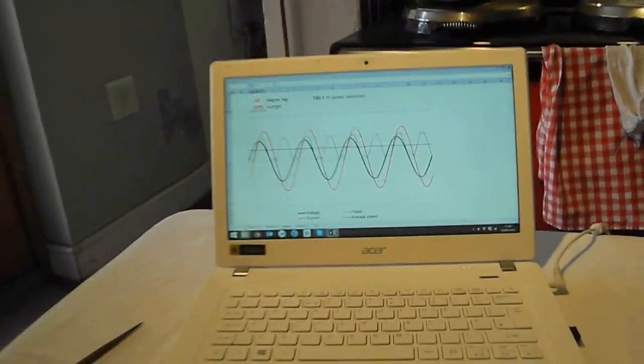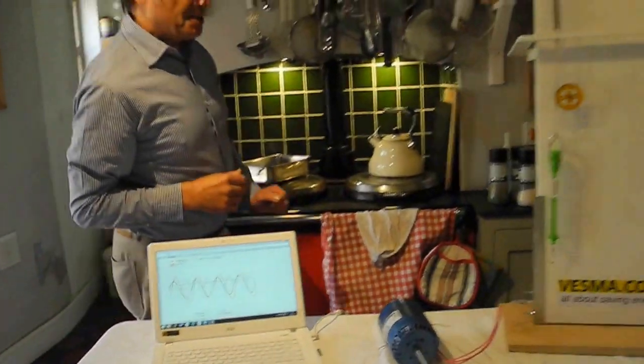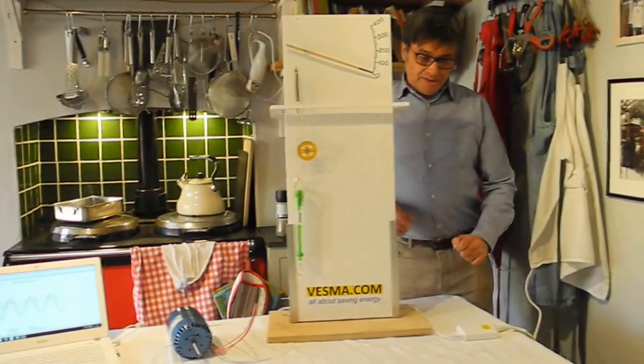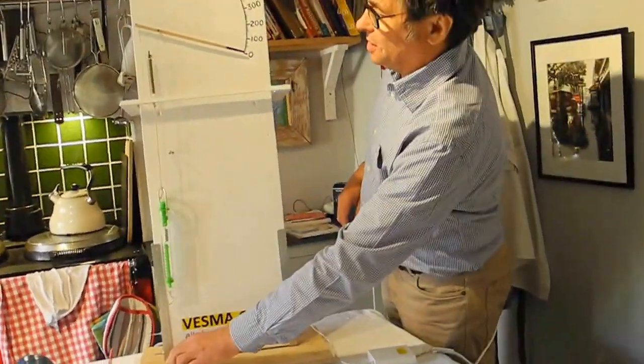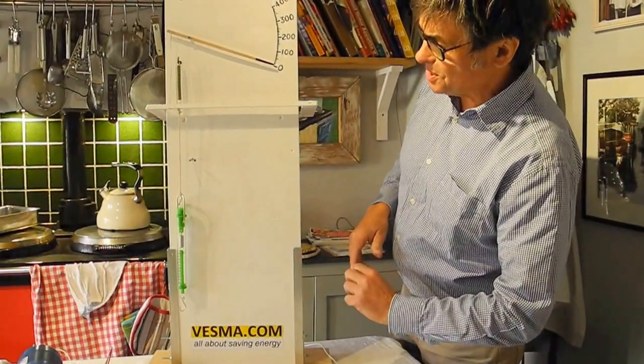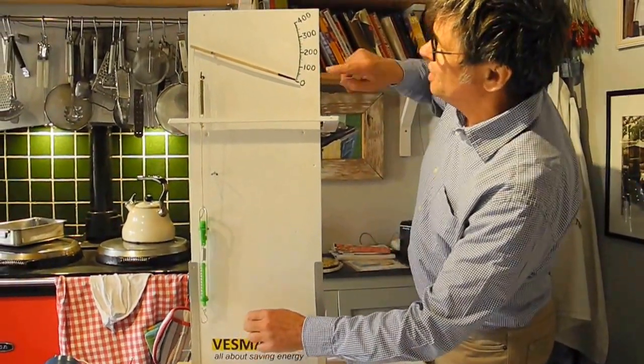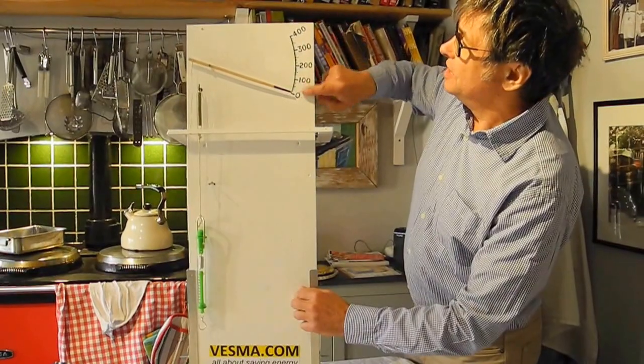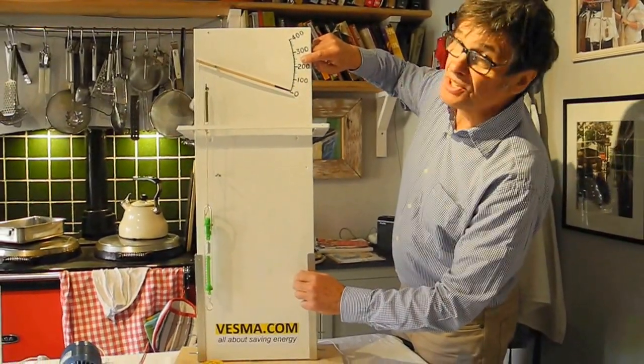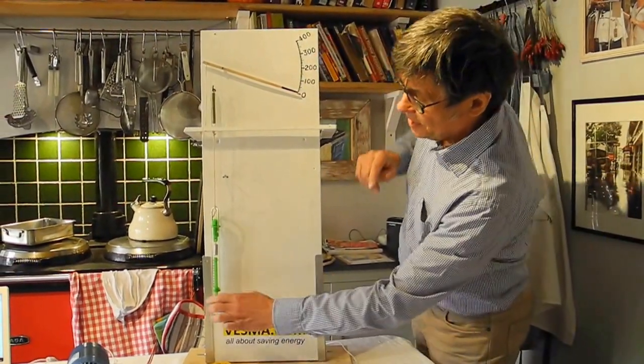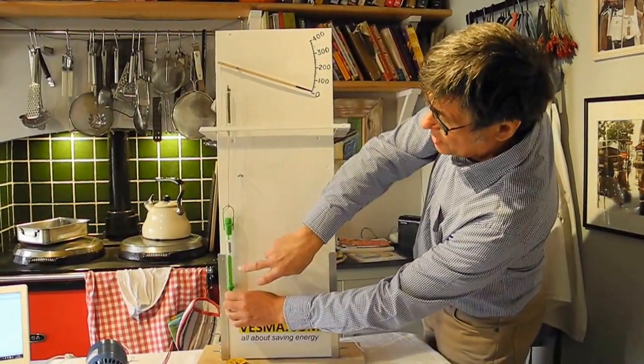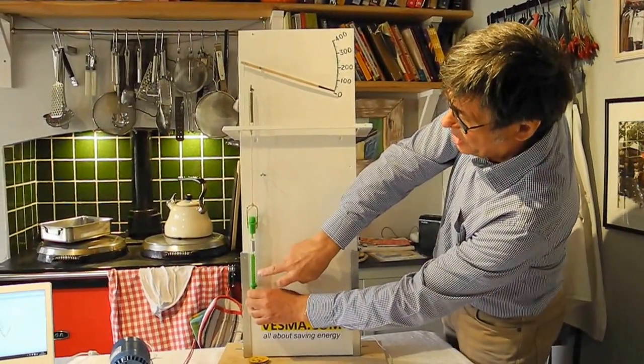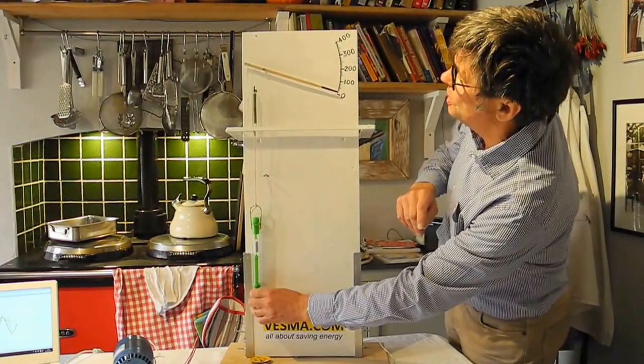Now another way to visualize that is here, and this apparatus that I have built using chopsticks, springs, string and wire, and on this scale here is going to represent the power delivered. And the tension in the string, measured by this spring balance here, will represent the current that's being drawn.